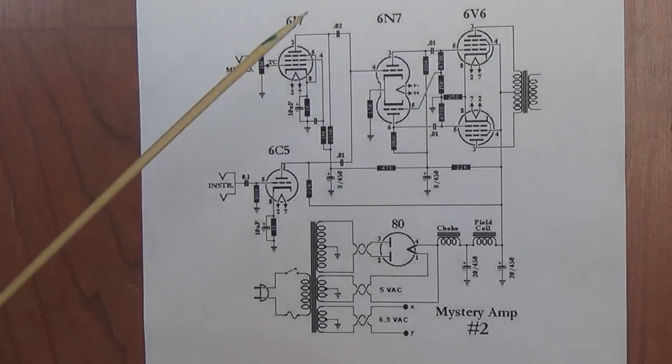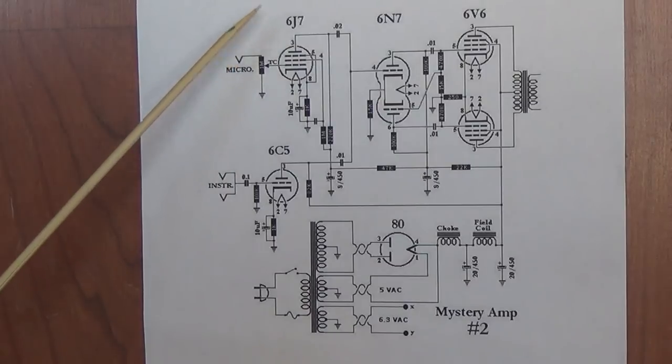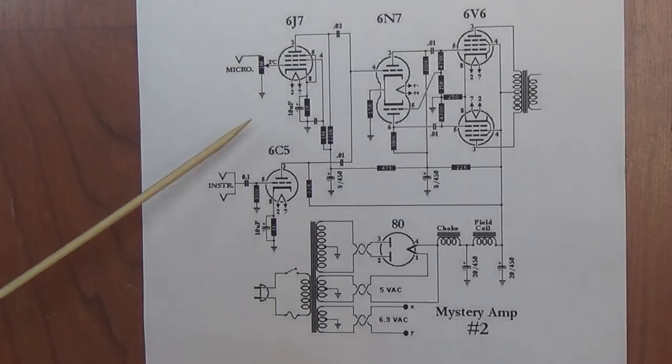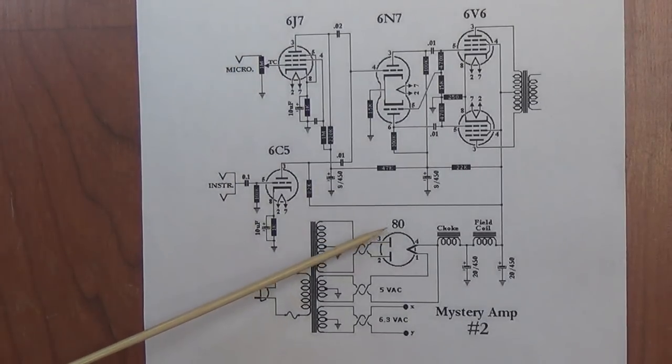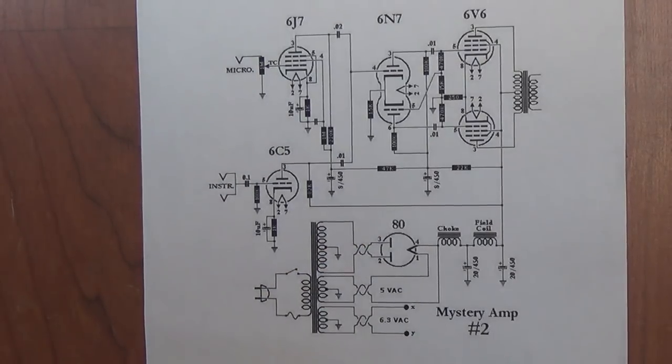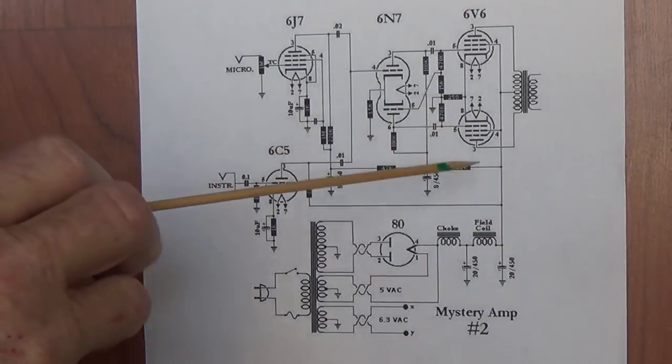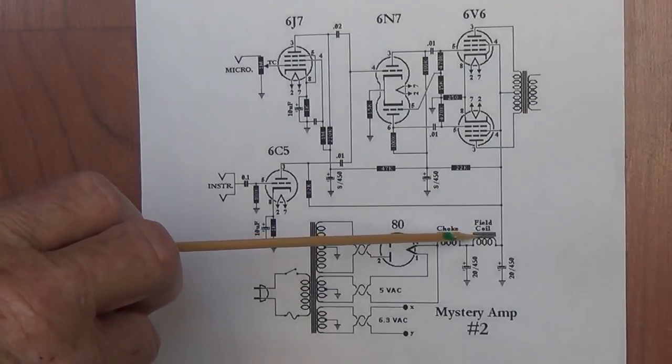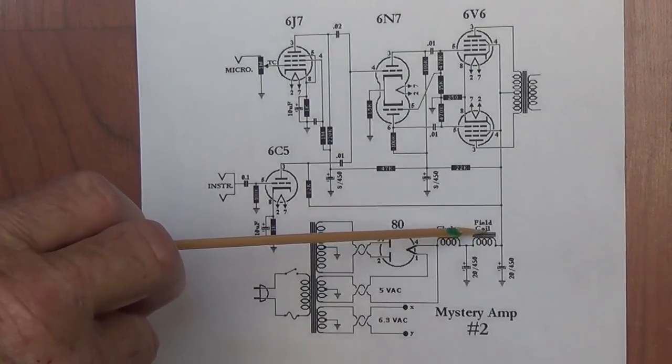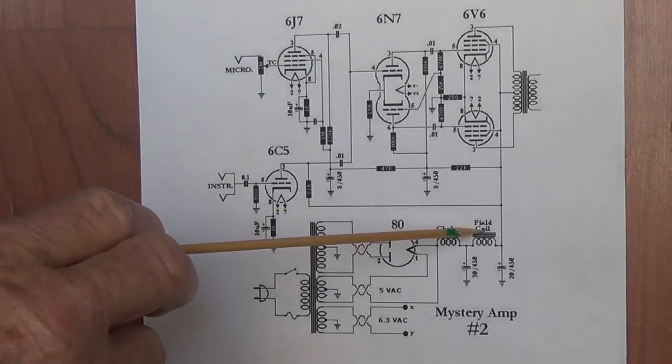Now let's take a look at the schematic and you'll see why I think it's rather unusual and very interesting. Number one, it uses some very early tubes: 6J7, 6C5, how about an 80 rectifier? That tube only has four pins. It also uses a field coil speaker, which is difficult if you're going to try to build this because field coil speakers are kind of hard to come by.